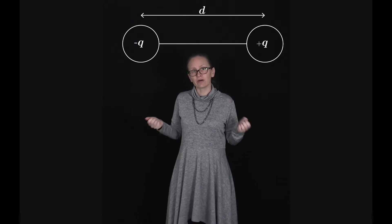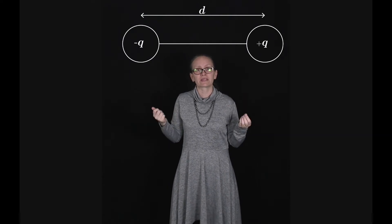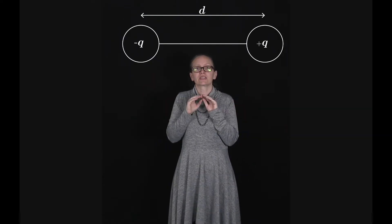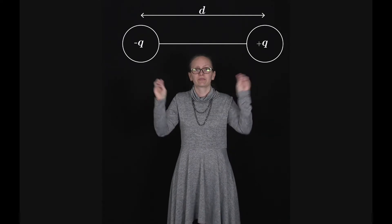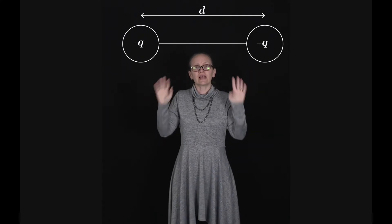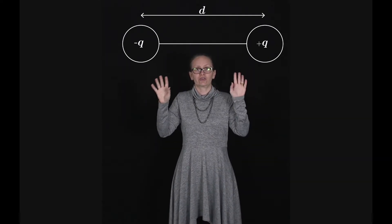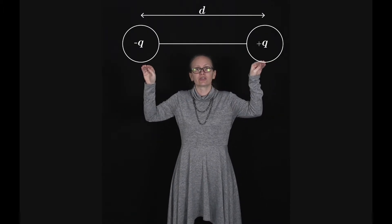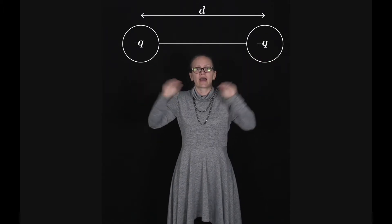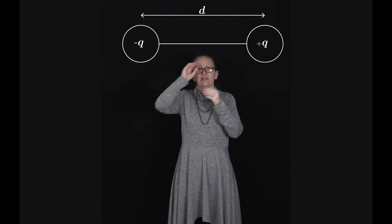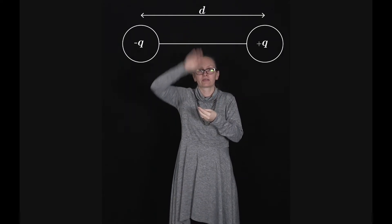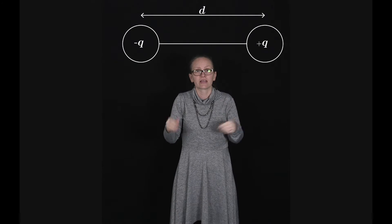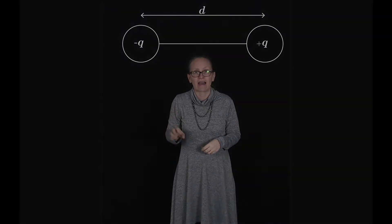A dipole consists of two equal and opposite charges, plus q and minus q, which are separated by a distance d. We'll work out the electric field due to the dipole along the axis joining the two charges, and then also along the line through the middle of the dipole but perpendicular to this.